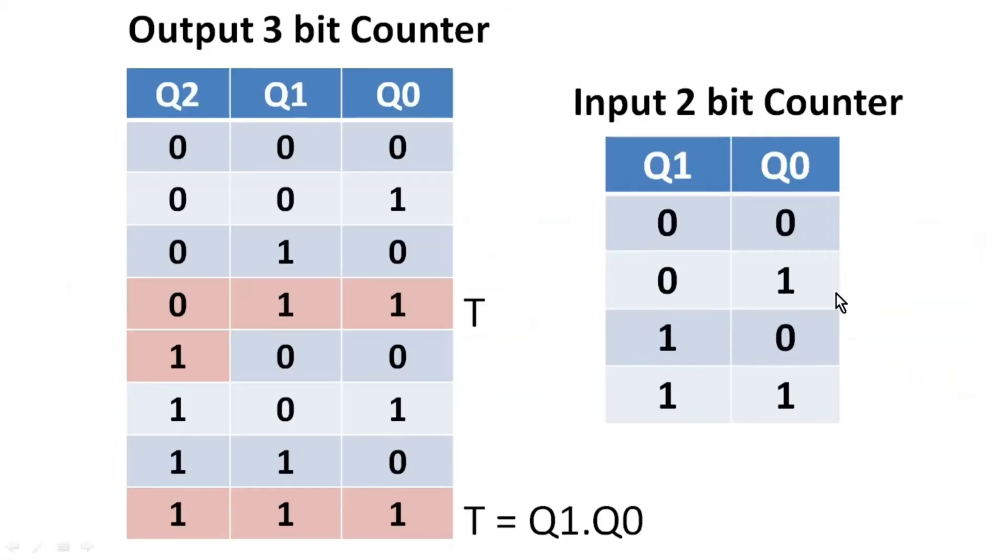This is a 2-bit input counter which has two outputs Q1 and Q0 and it flows like this. It counts from 00 to 11 and then rolls back to 00 and it keeps on going like this.